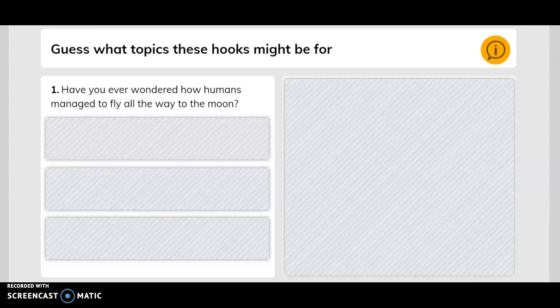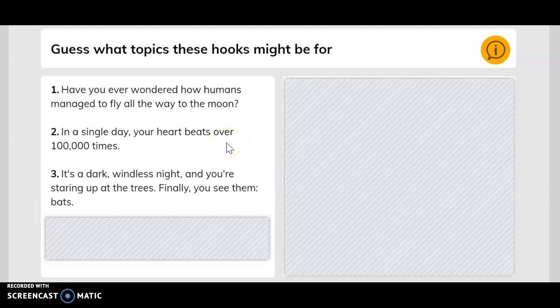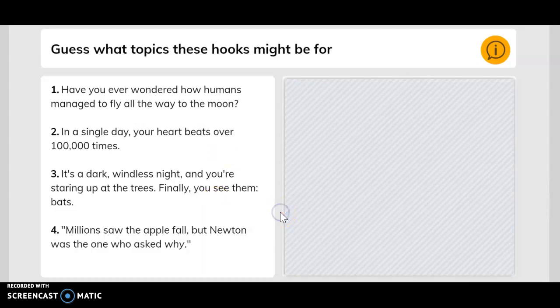Guess what topics these hooks might be for. Have you ever wondered how humans managed to fly all the way to the moon? In a single day your heart beats over a hundred thousand times. It's a dark windless night and you're staring at the trees. Finally you see them - bats. Millions saw the apple fall but Newton was the one who asked why.